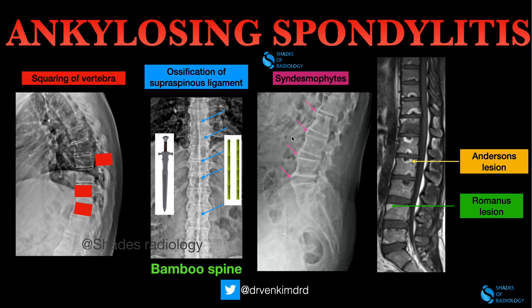If you see the syndesmophytes, they are continuous — thin and smooth, continuously running along the vertebra bilaterally. This entire spine on coronal or AP view on X-ray gives you a bamboo spine appearance because of these smooth syndesmophytes.